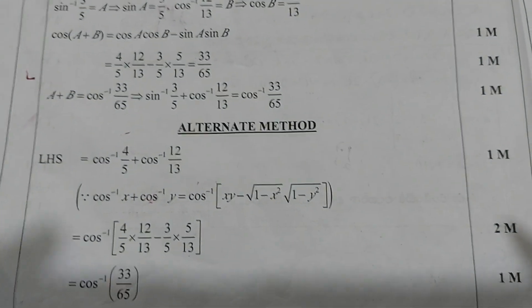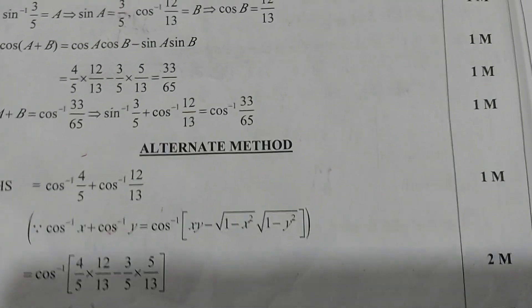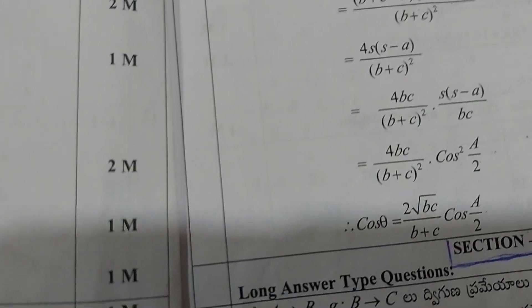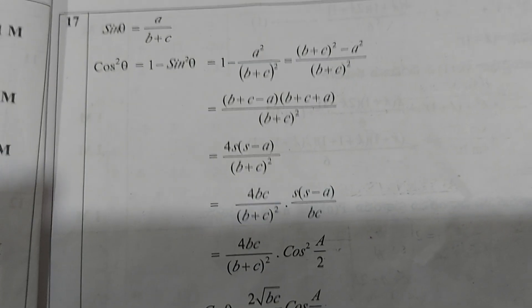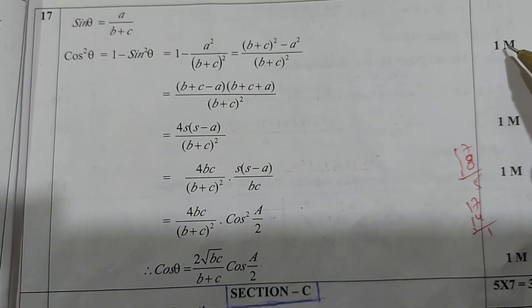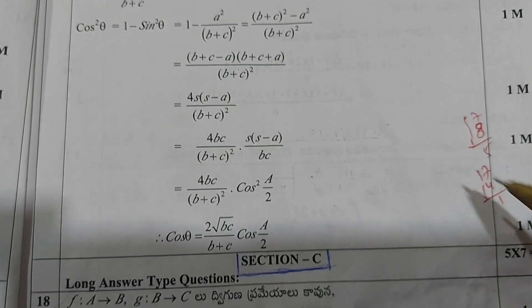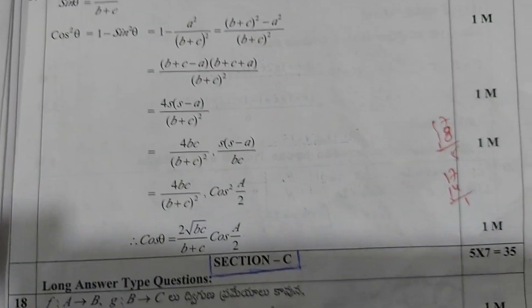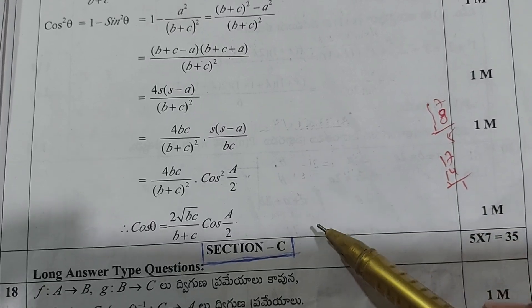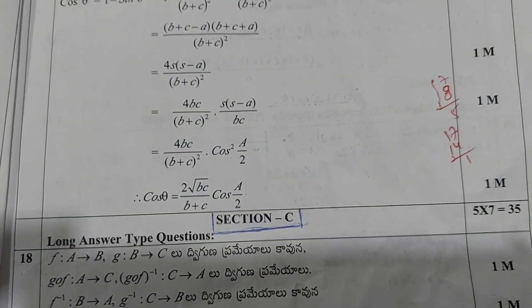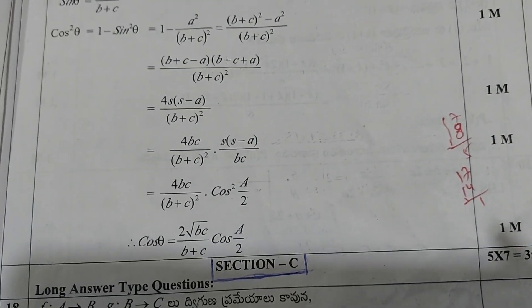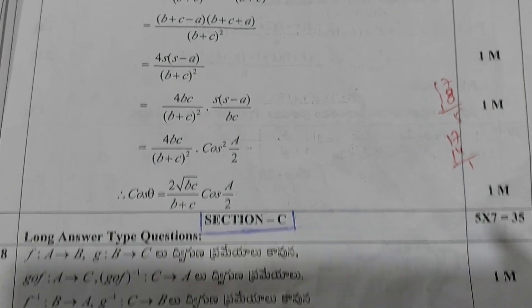Now we move on to question number 17: 1 plus 1 plus 1 plus 1 plus 1 plus 1 plus 1. This is also over. Section B — SAQ part — is also over.